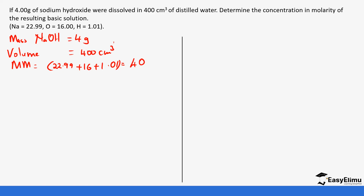So those are the things we have: the mass, the volume, and the molecular mass. We have been told to determine the concentration, and we can use the formula or the first principle — I'll show you both. In this case we are calculating molarity. Molarity equals number of moles over volume.